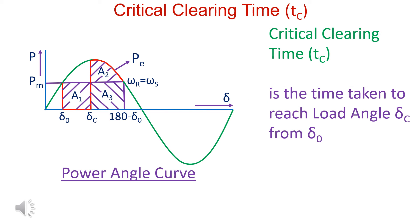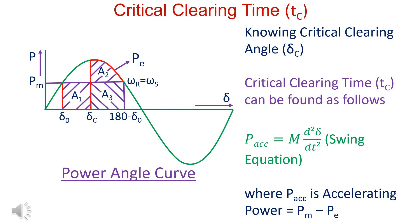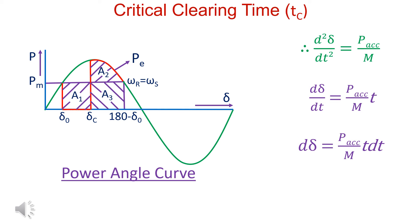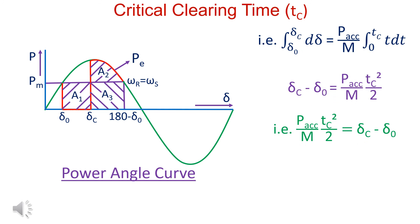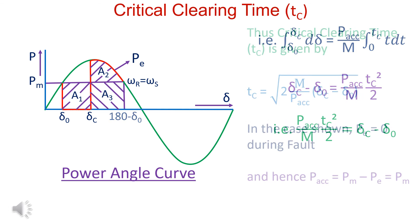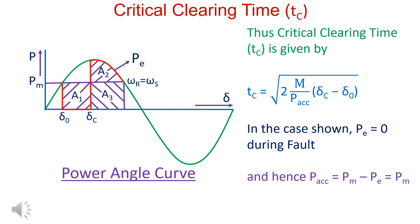Critical clearing time is the time taken for the load angle to reach delta_C. As per the swing equation, oscillating power equals M times d²delta/dt². Solving gives d(delta) equal to (oscillating power / M) times dt. Further solving, we get oscillating power divided by M times tc² divided by 2 equals (delta_C minus delta_0). Therefore, critical clearing time tc equals the square root of 2M times (delta_C minus delta_0) divided by oscillating power.